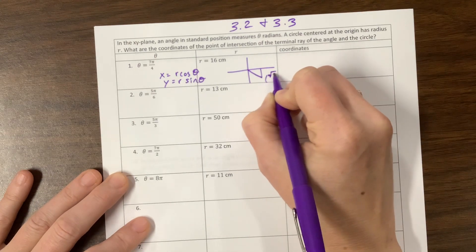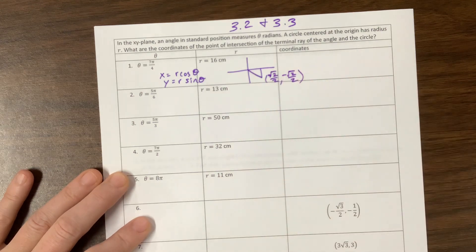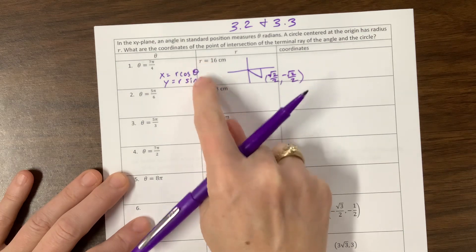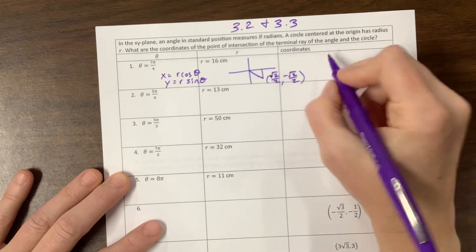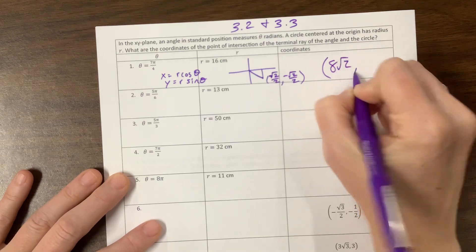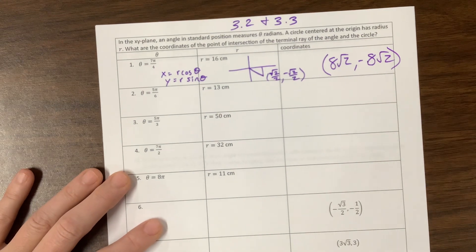Now I have to take those coordinates—the cosine and sine values—and multiply them by the radius. So this gives me coordinates of 8√2, negative 8√2. And that's how we do that first problem.